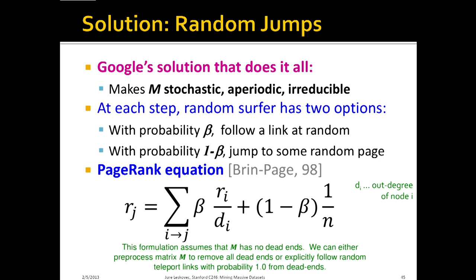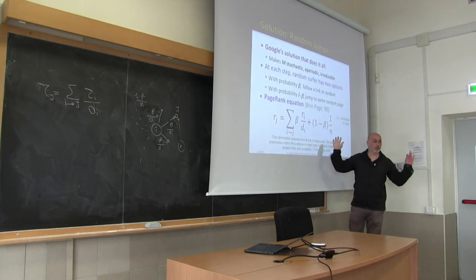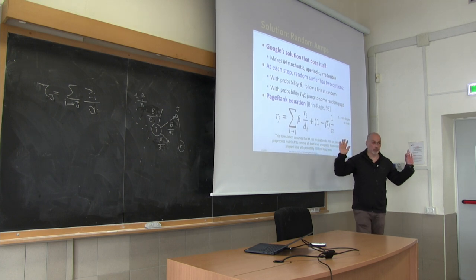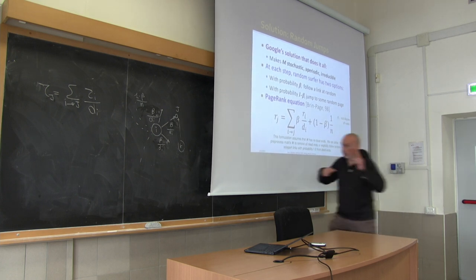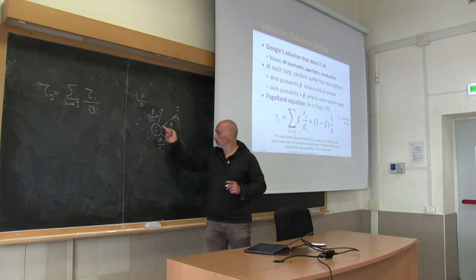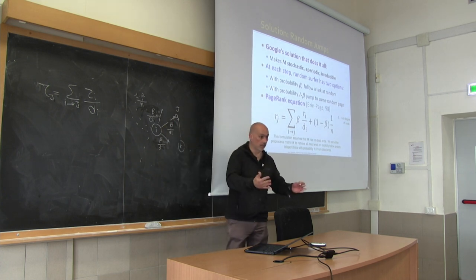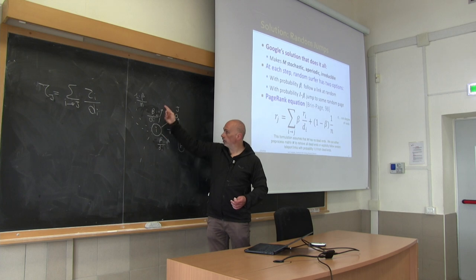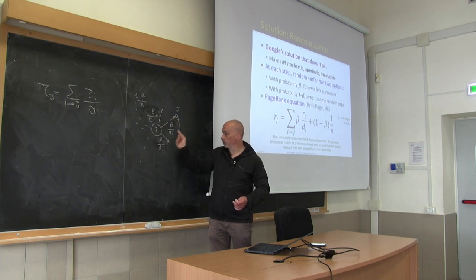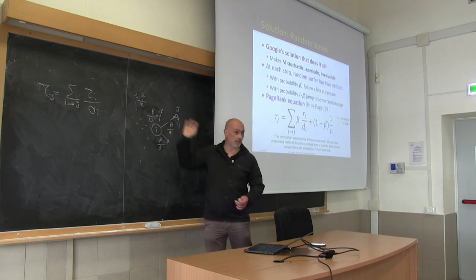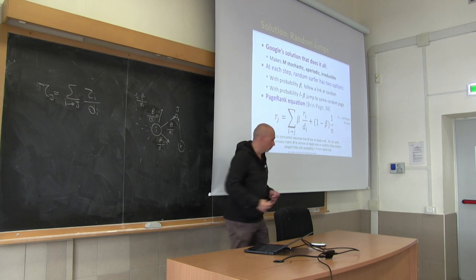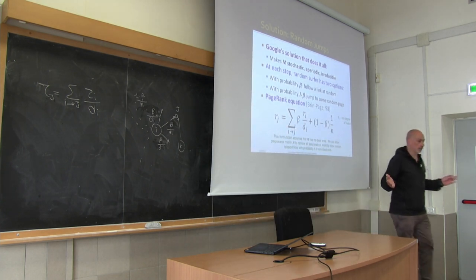Toss a coin. If this event occurs, follow the links as before. Otherwise, if this happens, jump uniformly at random to all possible vertices, including yourself and including existing neighbors. So the probability of following an existing link is beta/out-degree(i) plus (1 minus beta)/n — you also have that uniform contribution.